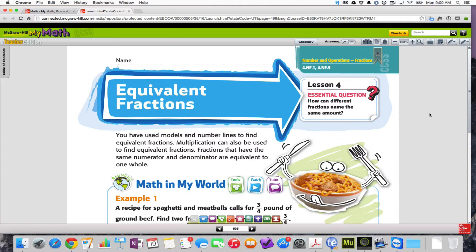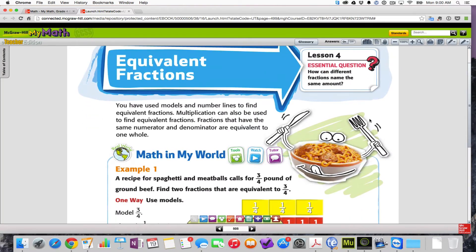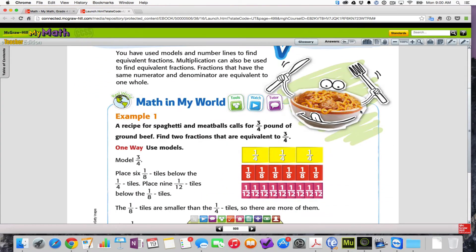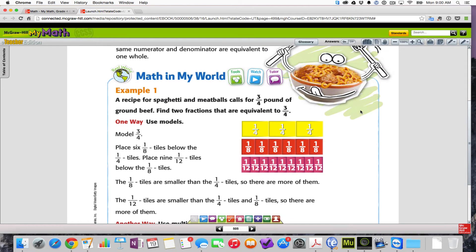In our last lesson, we talked about equivalent fractions, fractions that basically mean the same thing or represent the same amount, but just are written differently. And we used models to figure out what those things were. Today, we're going to use multiplication to basically save us the time of having to get out the models and make it work. But we'll look at some models to kind of demonstrate how this works.